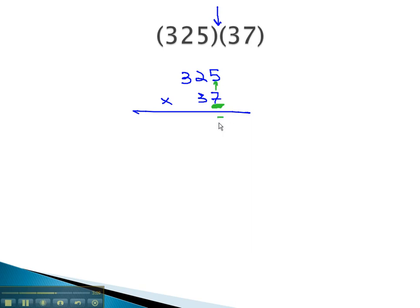7 times 5 is 35. Again, we don't write the 30 part, but we carry it to the next digit. 7 times 2 is 14, and we have 3 more. 14 and 3 is 17. And again, we'll carry the 1. 7 times 3 is 21, and an extra 1 gives us 22.